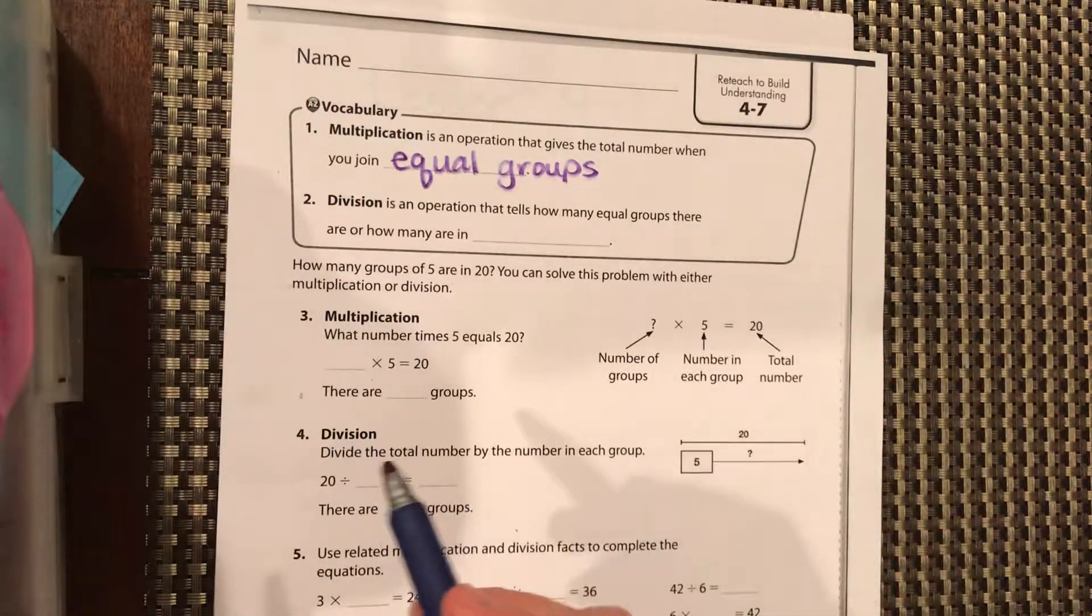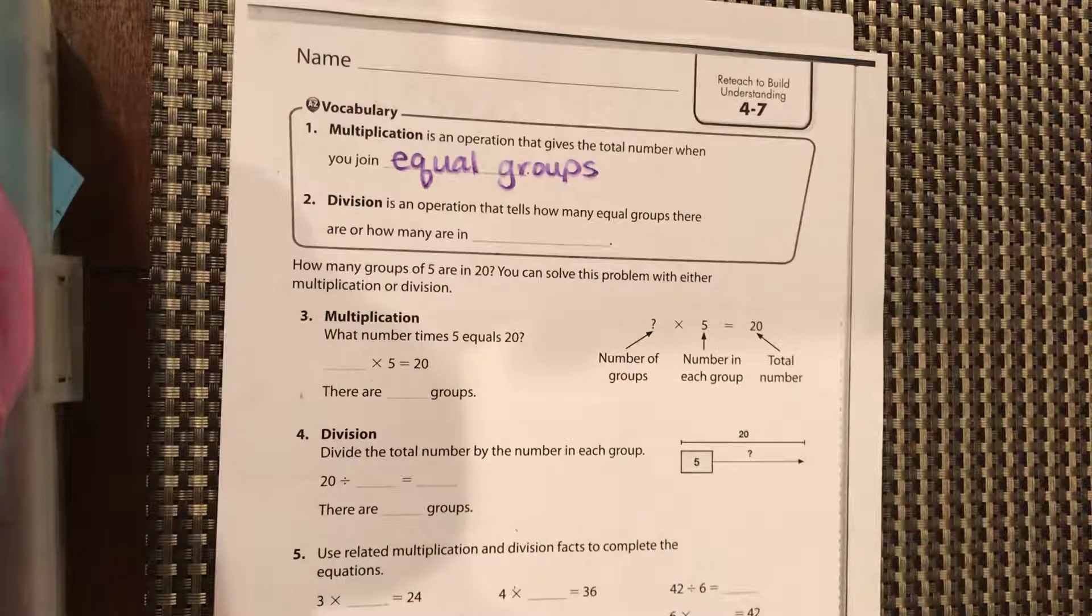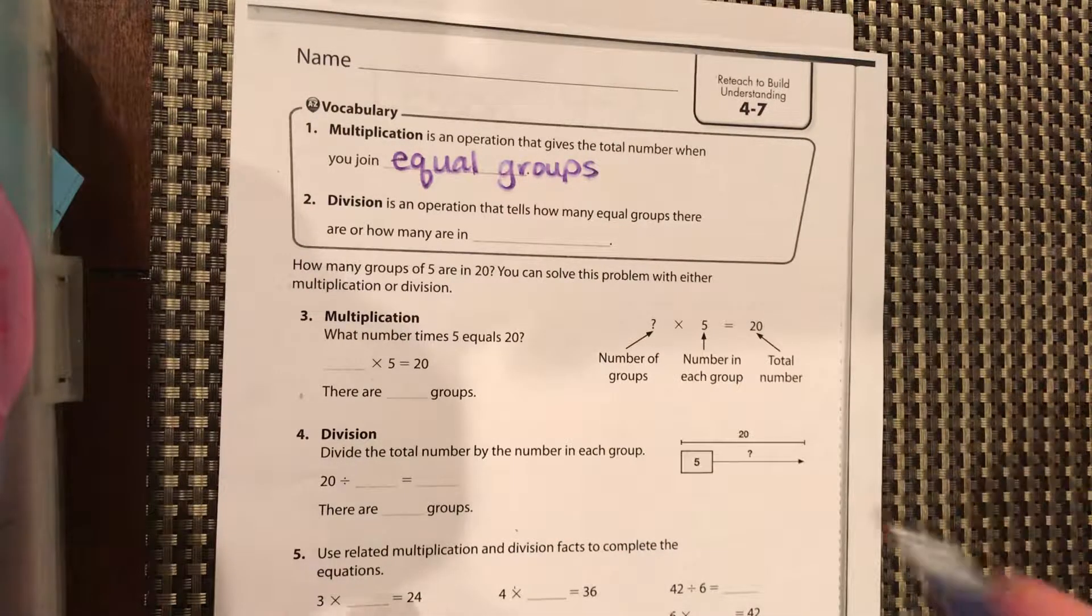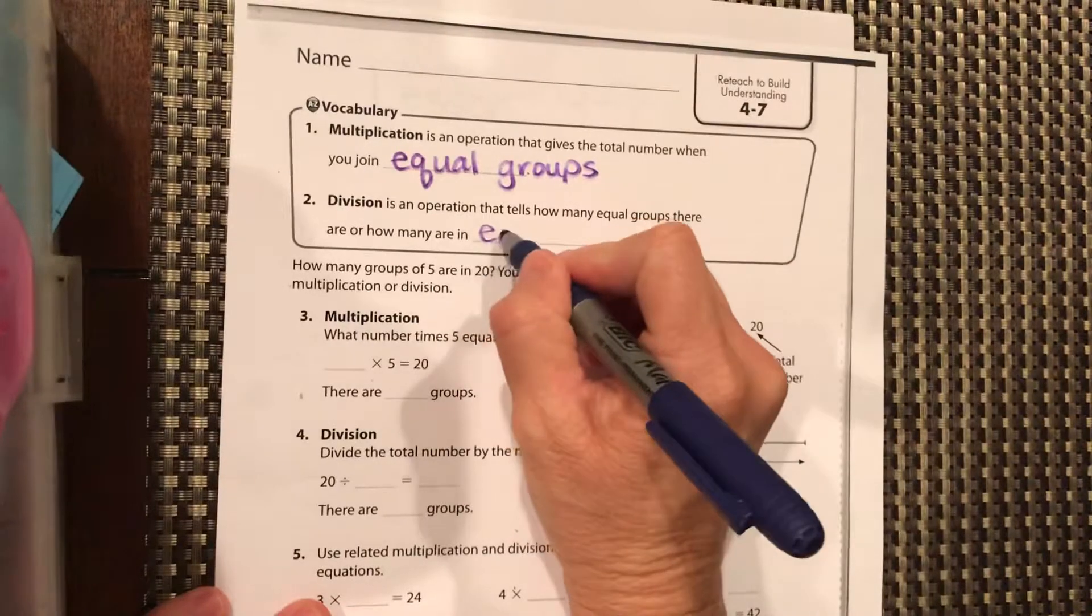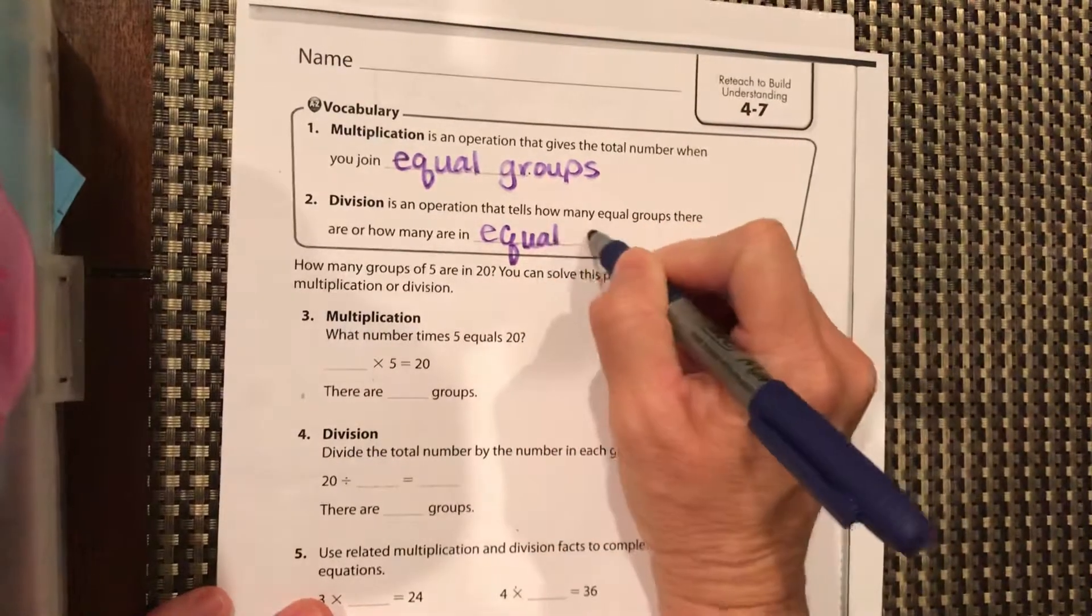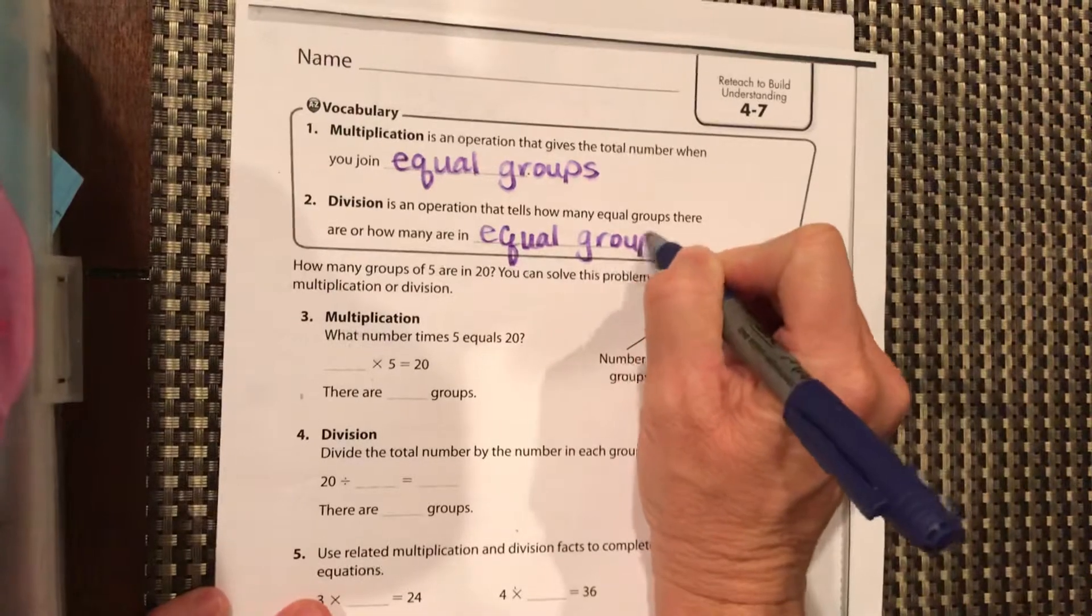Division is an operation that tells you how many equal groups there are, or how many are in each one of those equal groups.